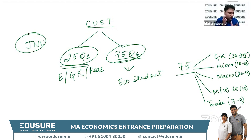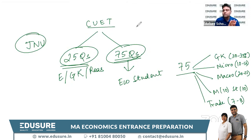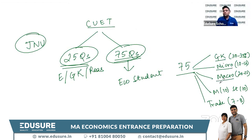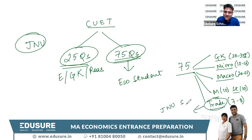Regarding the level of questions in CUET, it will be similar to JNU past papers. Mixing JNU and Hyderabad past papers for preparation would be a good idea. GK questions from JNU past papers give you a good idea; Micro and Macro questions are quite similar to JNU and Hyderabad past papers; Math and Stat levels are very similar as well. For Trade questions, JNU SIS past papers are especially useful as they used to ask a lot of trade questions.